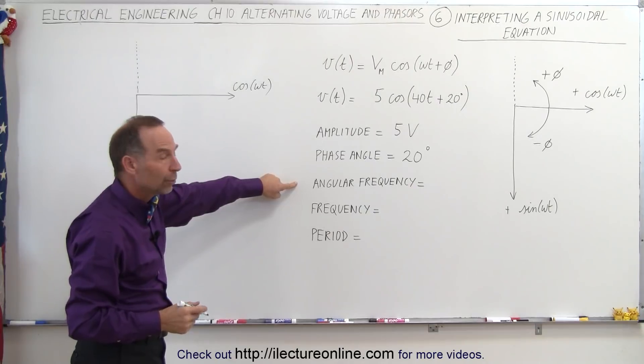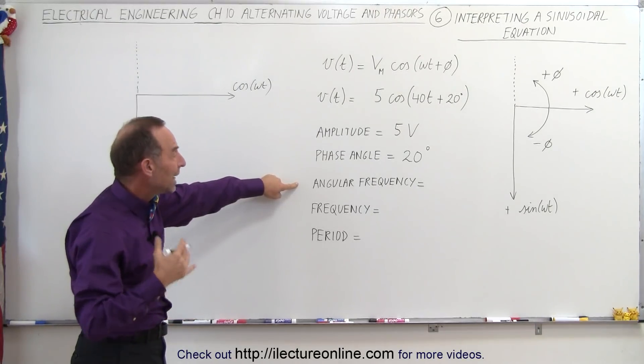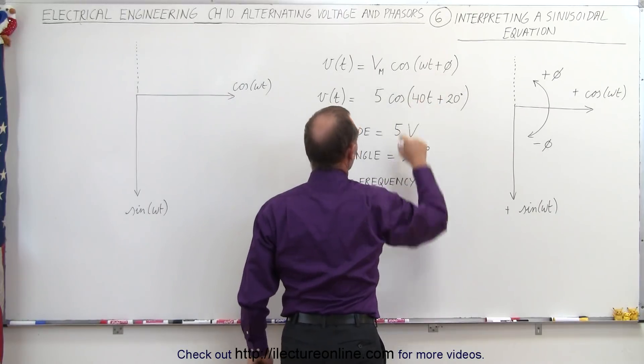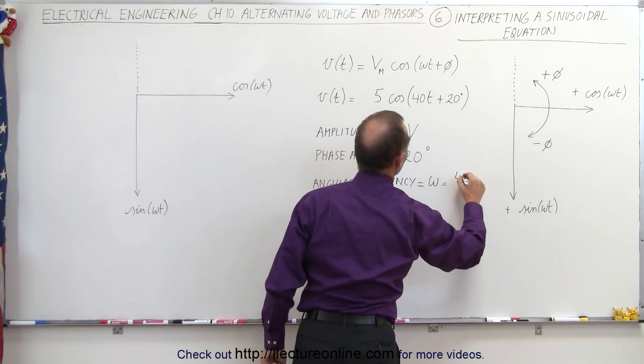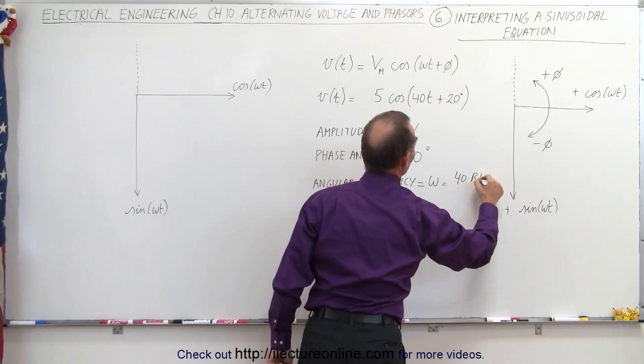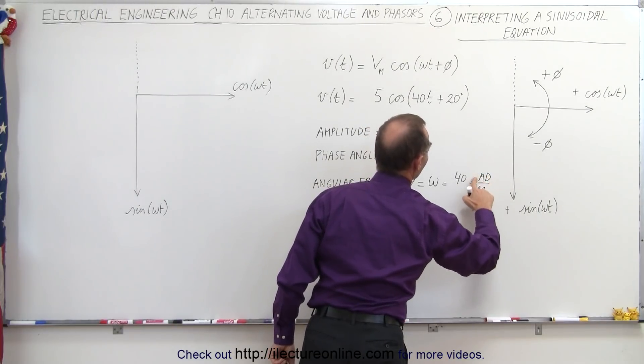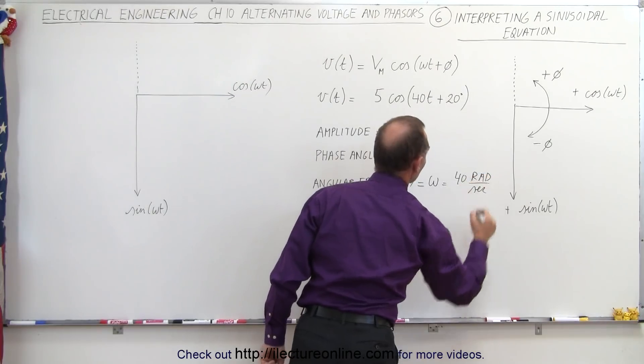The angular frequency, well the unit there would be radians per second, and it's the number in front of the t, omega. So that's equal to omega, which is equal to 40 radians per second, and so that would be the units for angular frequency, radians per second.